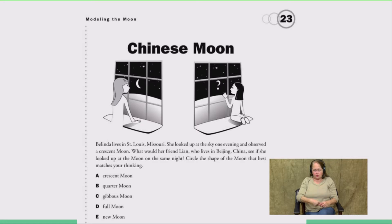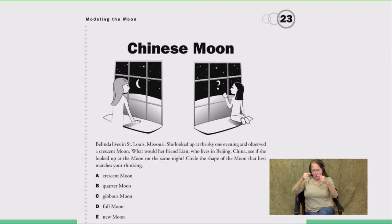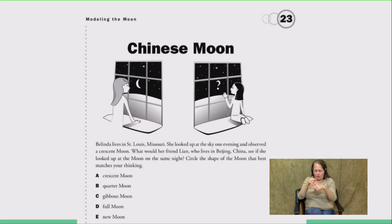What type of moon would Lin in China see? The choices are: a crescent moon, a quarter moon, a gibbous moon, a full moon, or a new moon. You've got to think — I know that Missouri is in the United States and I know that China is on the opposite side of the Earth. So these two kids are on opposite sides of the planet and looking up at the moon at night. If one of them sees a crescent, what will the other see?